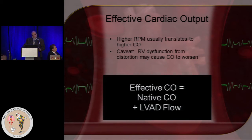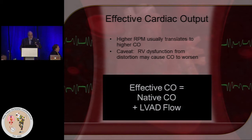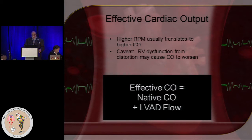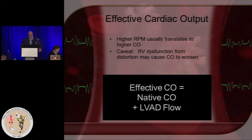Effective cardiac output I define as the combination of your native cardiac output — that going through the aortic valve — and your LVAD flow. Generally speaking, when you raise the RPM the flow goes up, with more blood flow going through the LVAD and less through the native heart. If you go too high on RPMs, you'll obviously get that septal shift. So again, there's a balance between too much and too little.